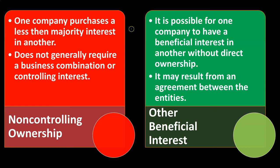We can also have an other beneficial interest. It is possible for one company to have a beneficial interest in another without direct ownership. This may result from an agreement between the entities — some kind of contractual agreement where there is a beneficial interest with the two entities being related in some way, but not through direct ownership of stock or a direct equity interest, but possibly through some type of contractual agreement.